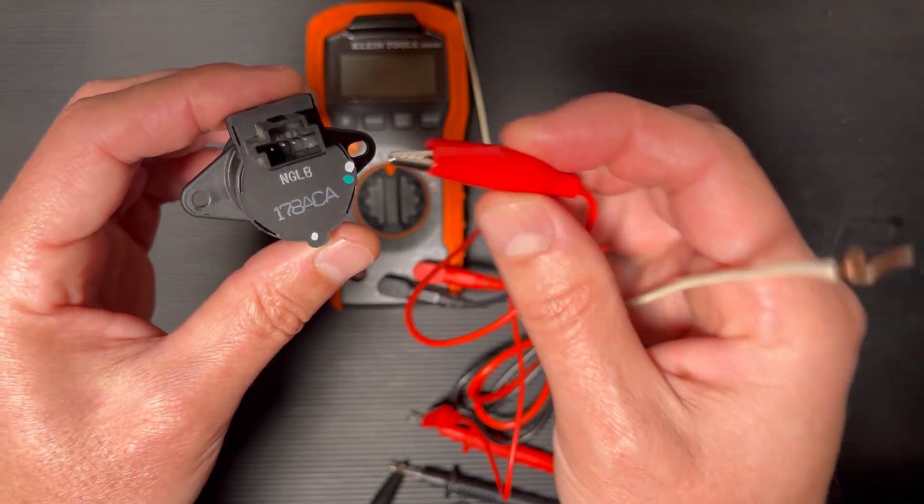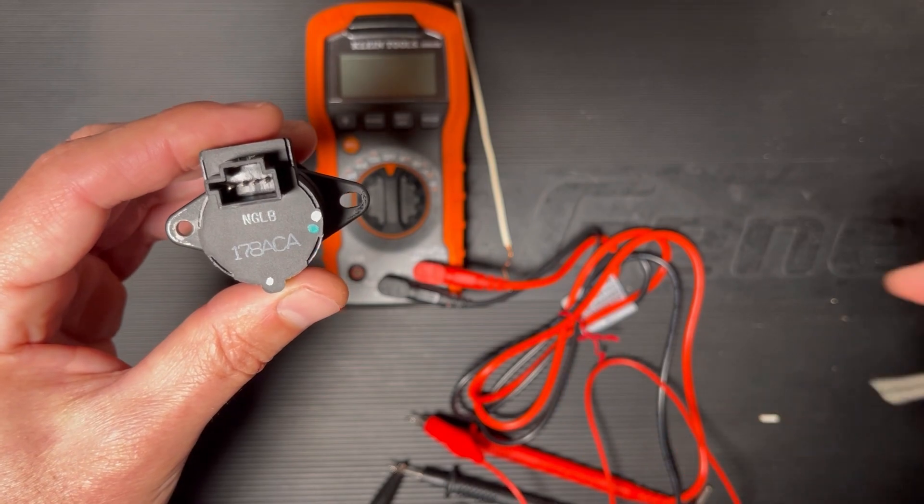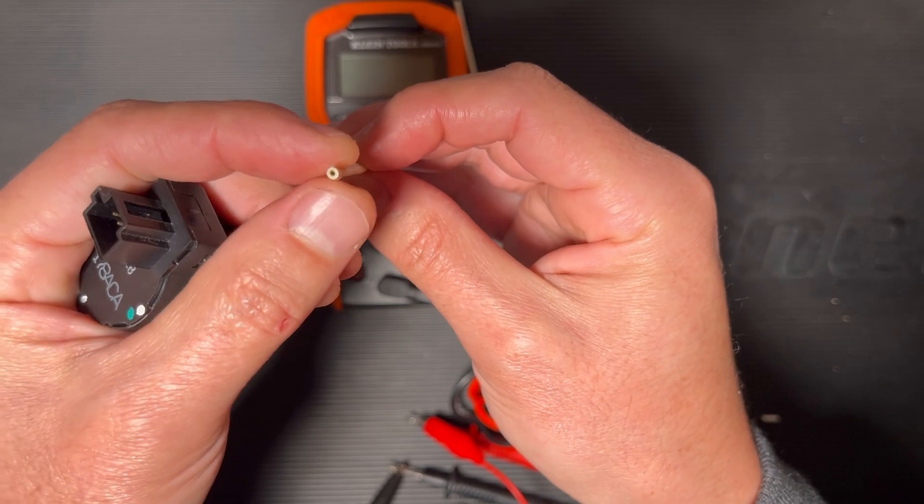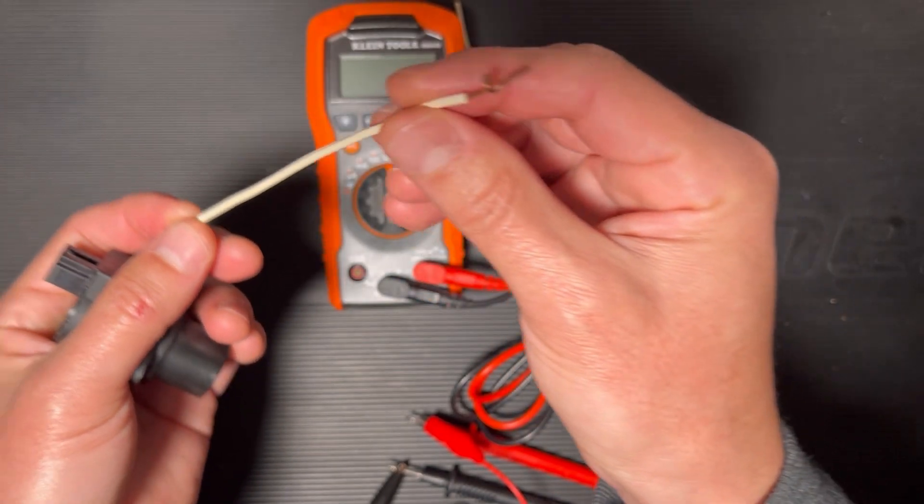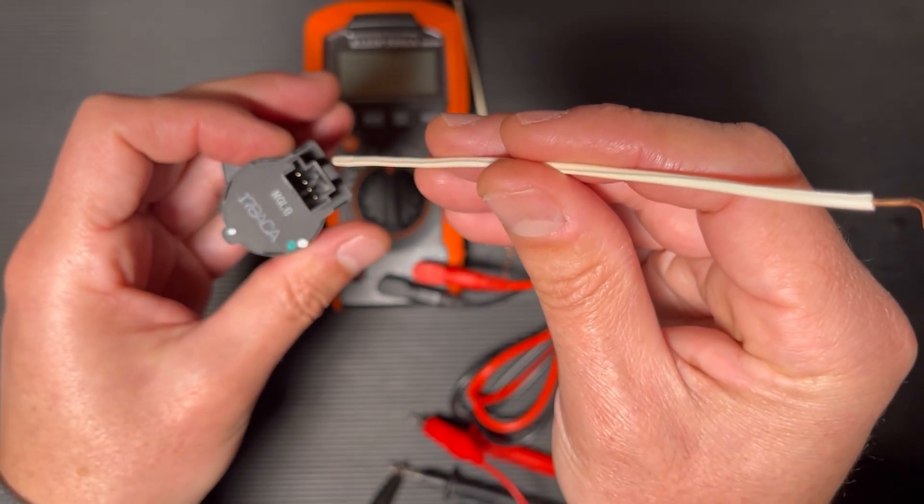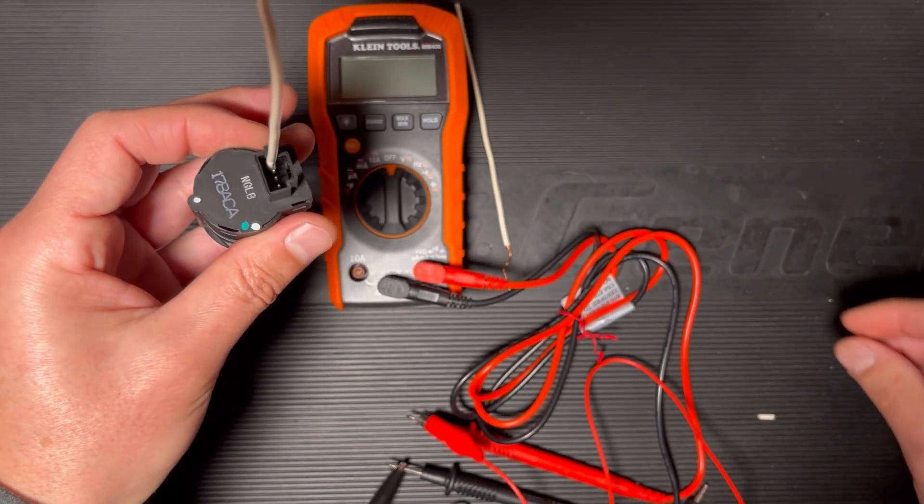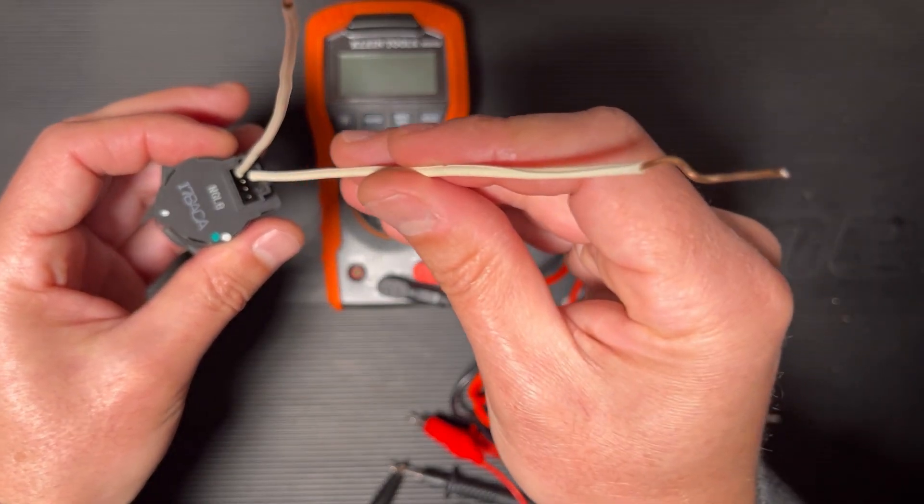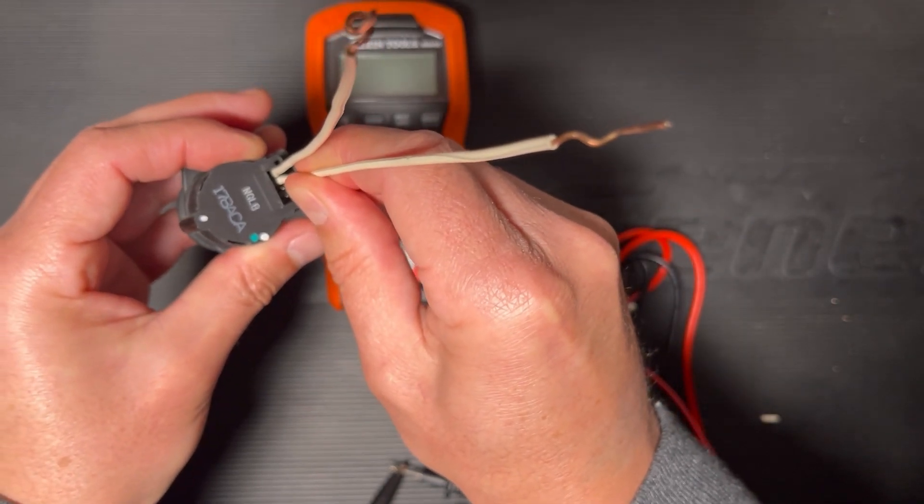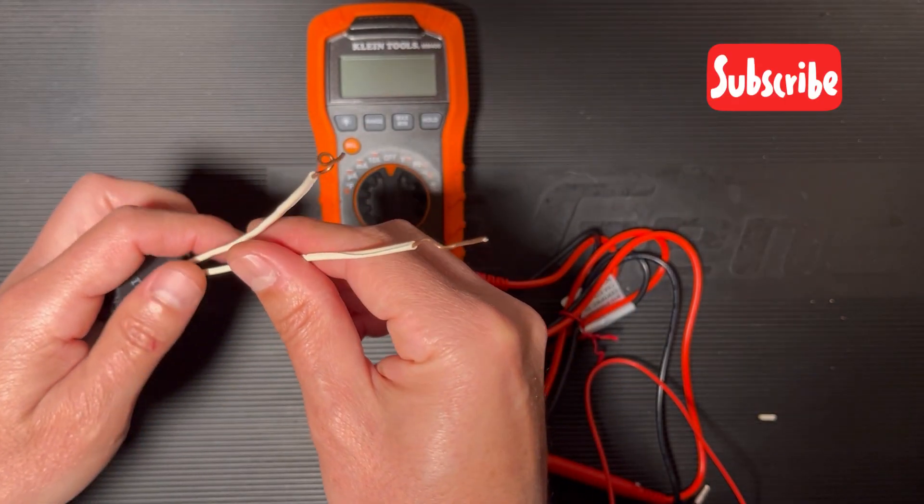I tried to use this alligator clip but they are too big to fit in there. So what I did is I removed a little bit of the wire insulation inside. Then I inserted it on the first pin, and now the other one I'm gonna insert on pin number two. Okay, right there. Make sure I'm making good contact.